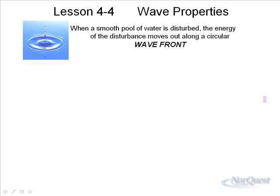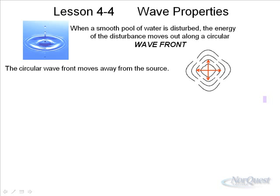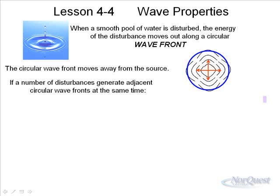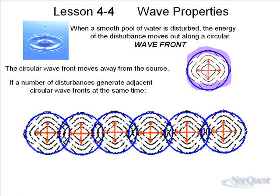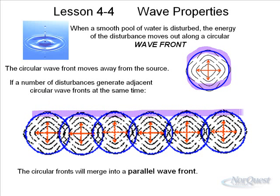When a smooth pool of water is disturbed, the energy of the disturbance moves out in what we call a wave front — a circular group of waves moving away from the source. If you lined up 50 pennies along a board and dropped them all into the water at the same time, each penny would produce circular wave fronts. A whole bunch together would have those circular wave fronts merge into what we call a parallel wave front, which is why we see waves coming in fronts rather than always being circular.